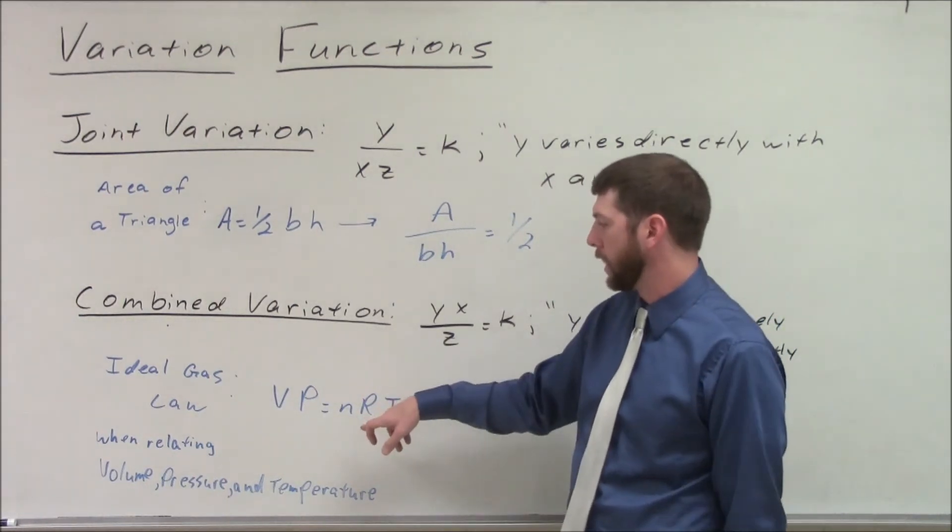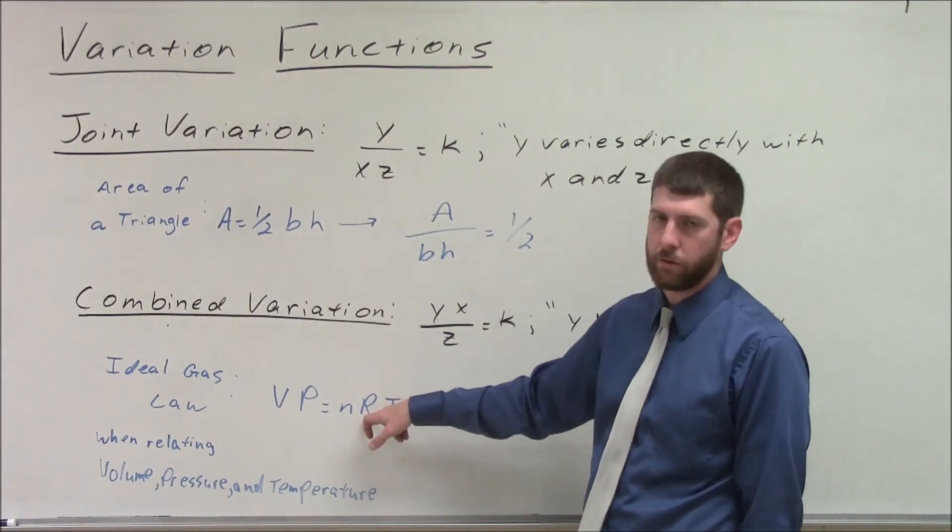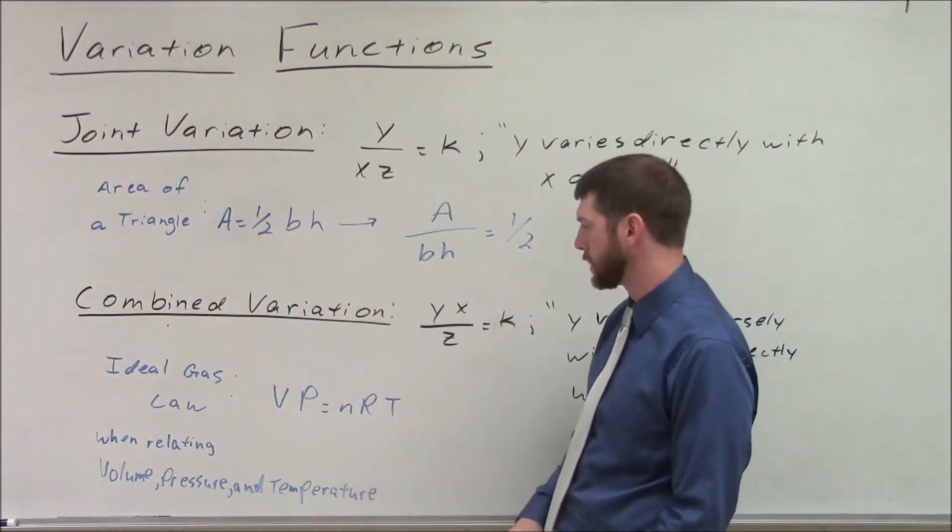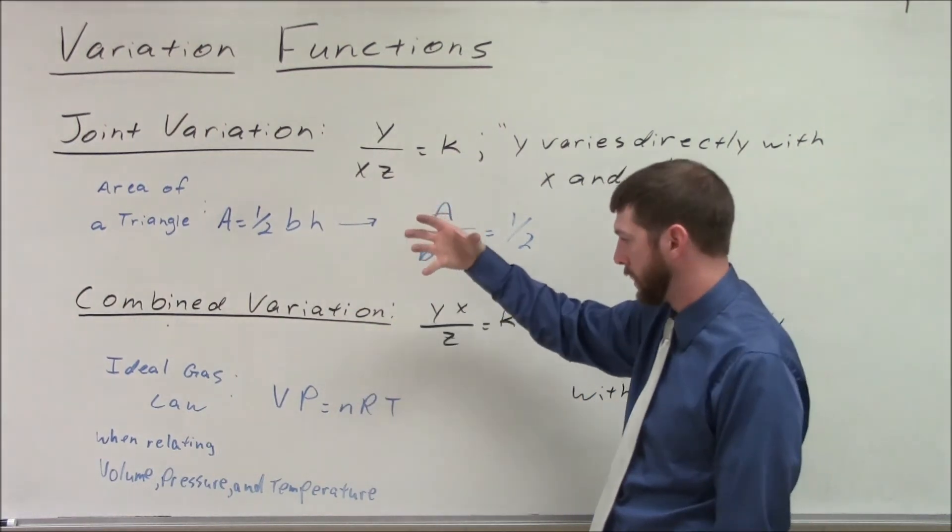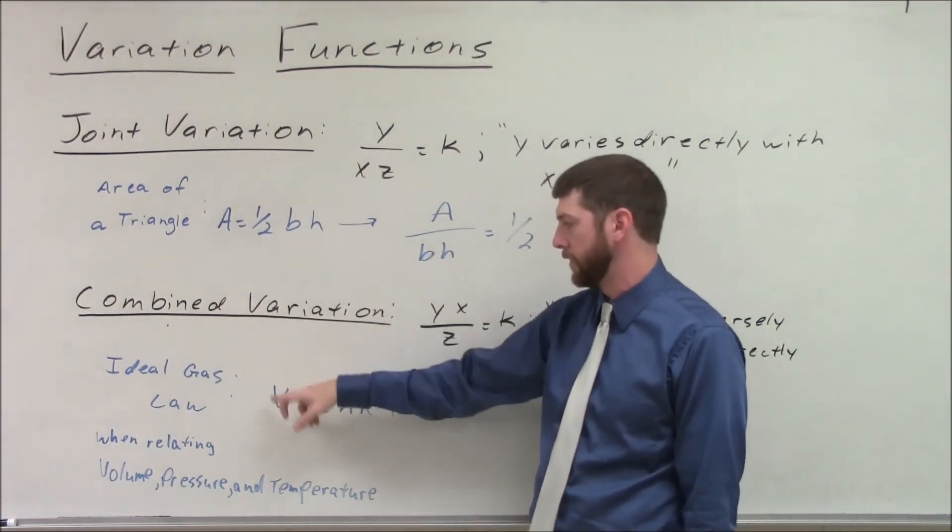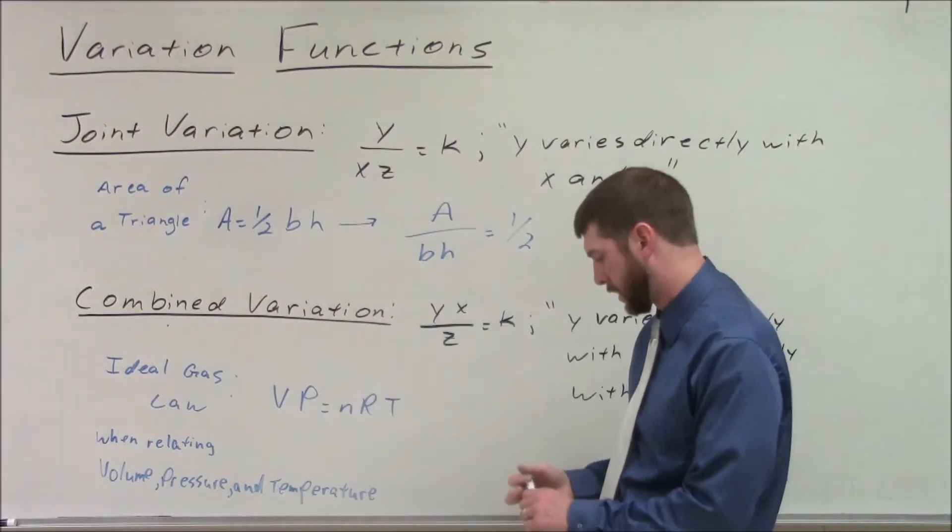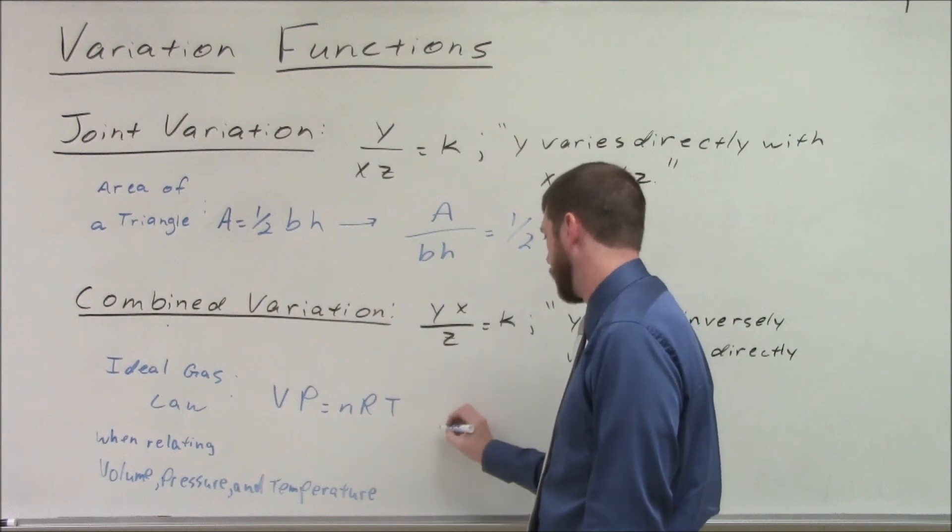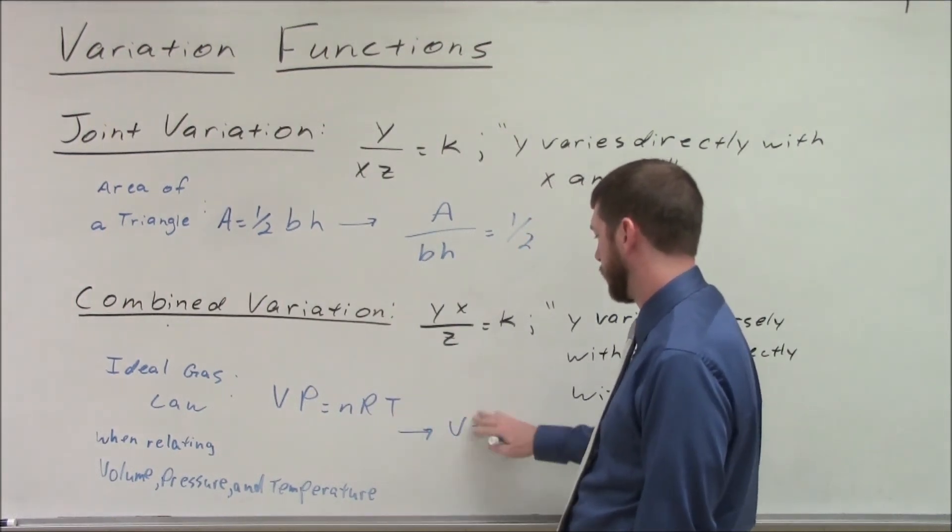Because n is the amount of the gas you have, and r is your ideal gas constant. So if we're looking at one gas, or one quantity of gas, and we're looking at relating volume, pressure, and temperature, these are going to be constant, that product's going to be constant. So we divided the t over, and we're focused on seeing how everything relates back to the volume.